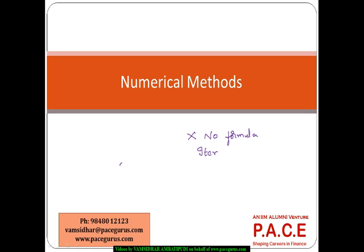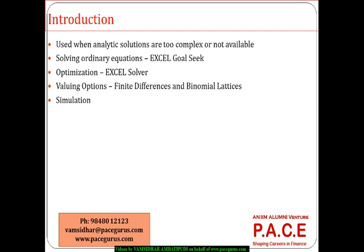We are going with some kind of iterative method, repeating using some kind of mechanism and trying to converge to a particular solution. These numerical methods are used in many areas in finance and various other business areas. They are a kind of iterations, especially when analytical solutions are not available. A closed formula kind of mechanism does not exist, or this formula has some kind of restrictions or assumptions in terms of usage. In those cases, we typically resort to numerical methods.